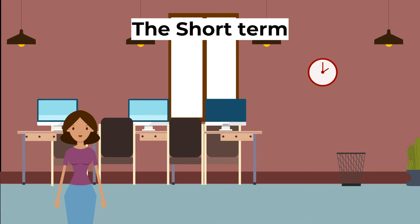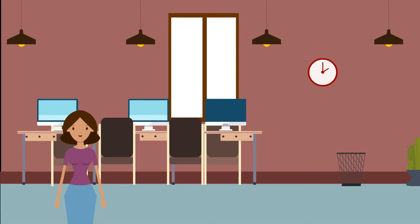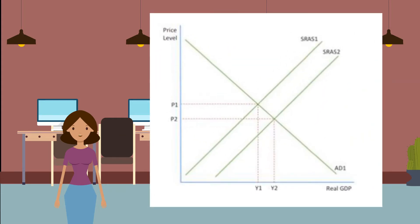Firstly, let's look at the short term. Both Keynesian and classical economists agree that in the short run, aggregate demand will be downward sloping and aggregate supply will be upward sloping. In this diagram, the initial equilibrium level is P1Y1 where AD1 and SRAS1 intersect. However, an increase in short-run aggregate supply to SRAS2 changes the equilibrium position to P2Y2, resulting in a fall in the price level and an increase in real GDP.